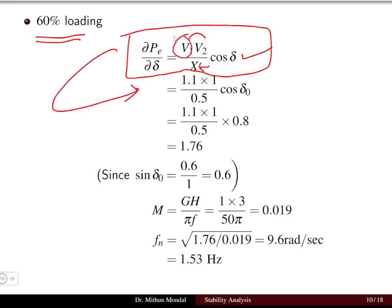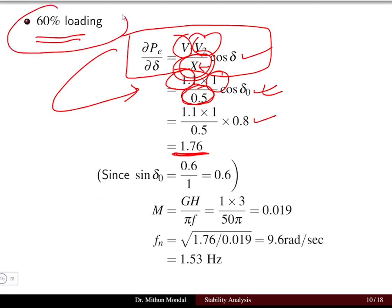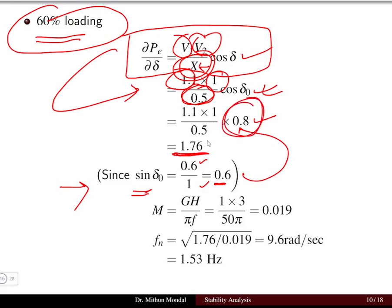For 60 percent loading: V₁ = 1.1, V₂ = 1.0, total reactance = 0.3 + 0.2 = 0.5 pu. Since the loading is 60% of maximum, sin δ₀ = 0.6, giving cos δ₀ = 0.8. Therefore dPe/dδ = (1.1 × 1.0 / 0.5) × 0.8 = 1.76. The value of M = GH / (πf) is calculated as 0.019.